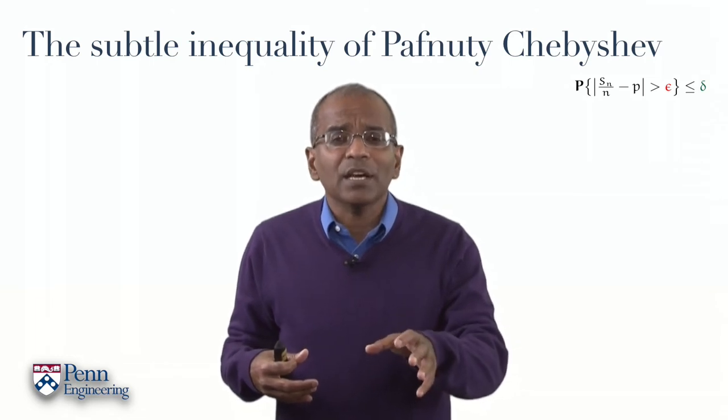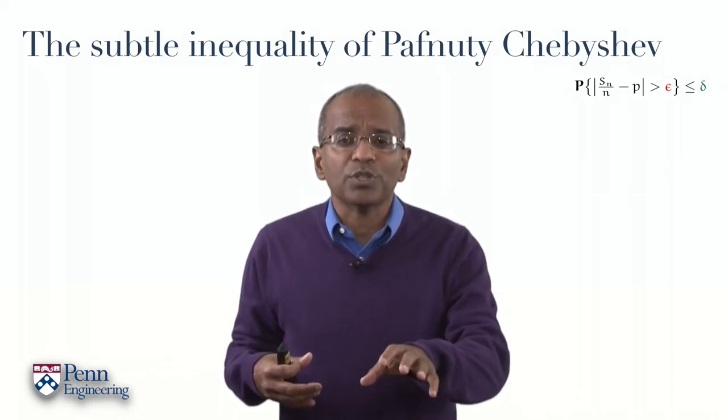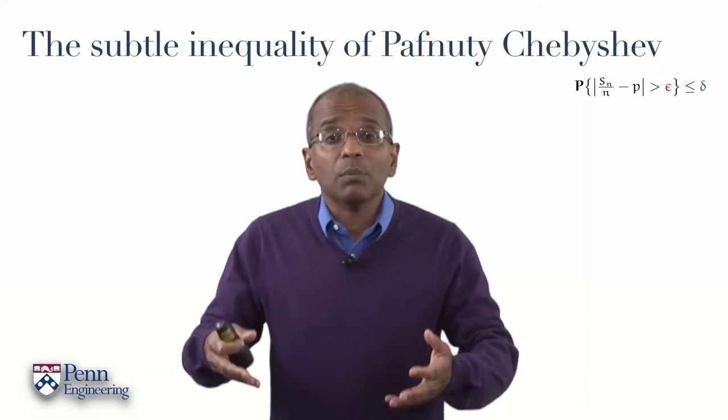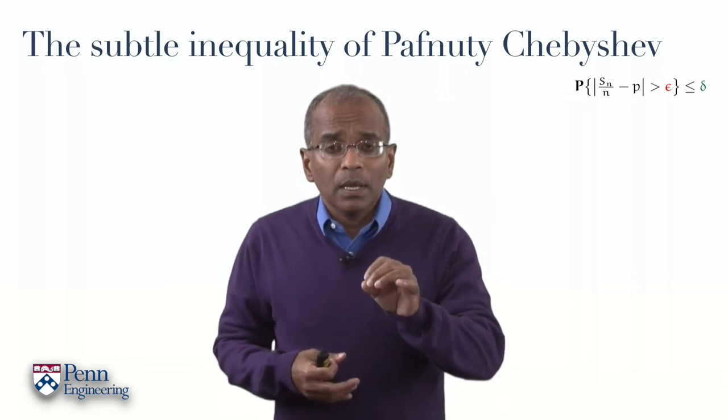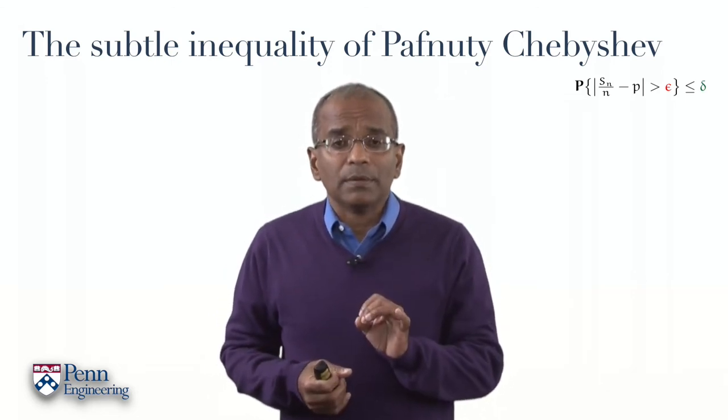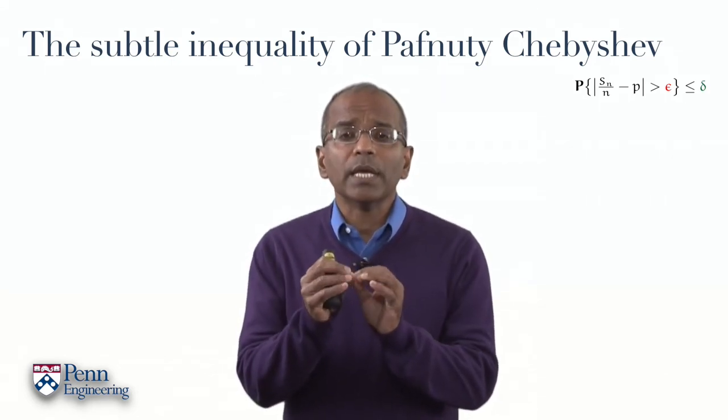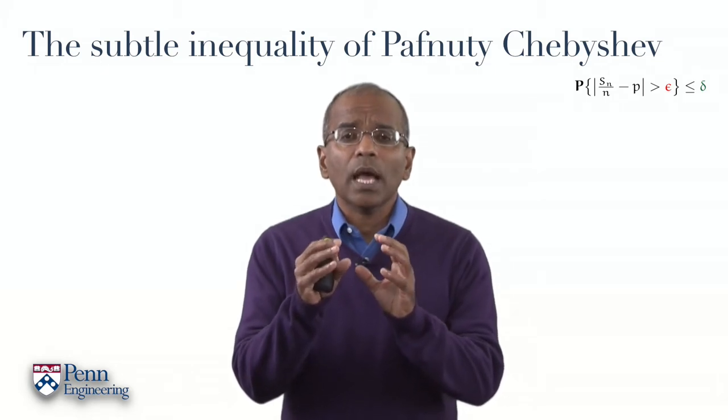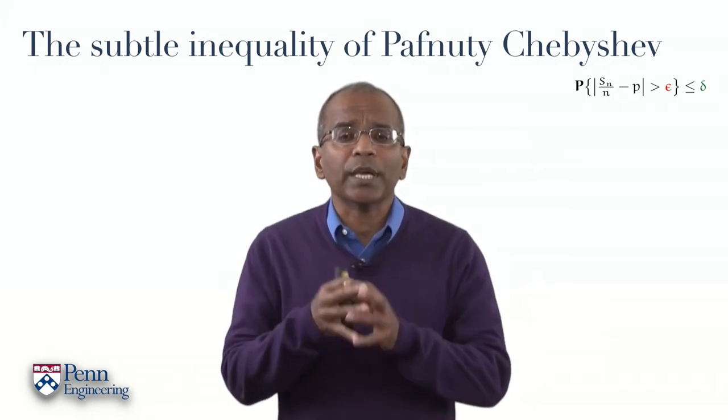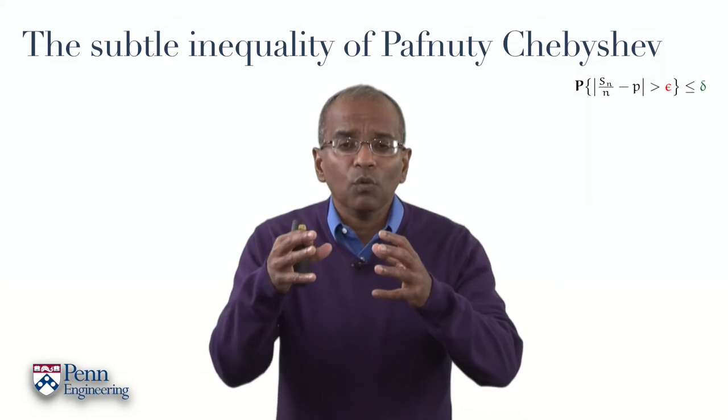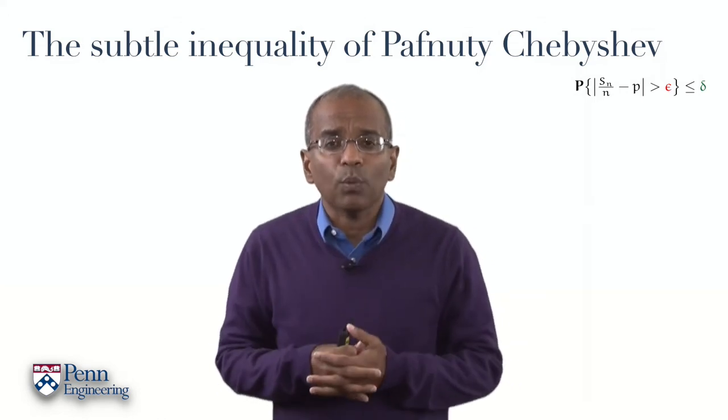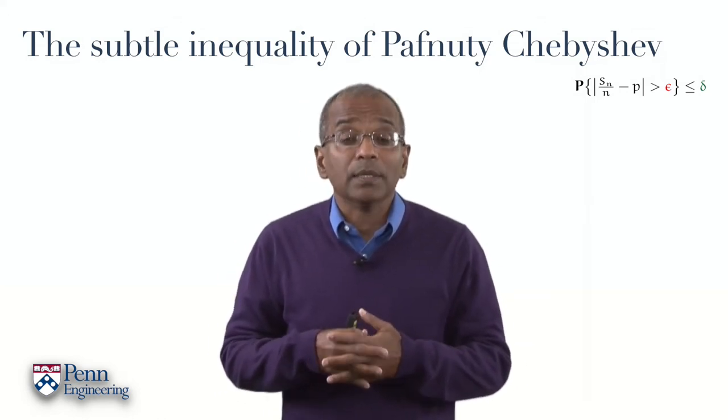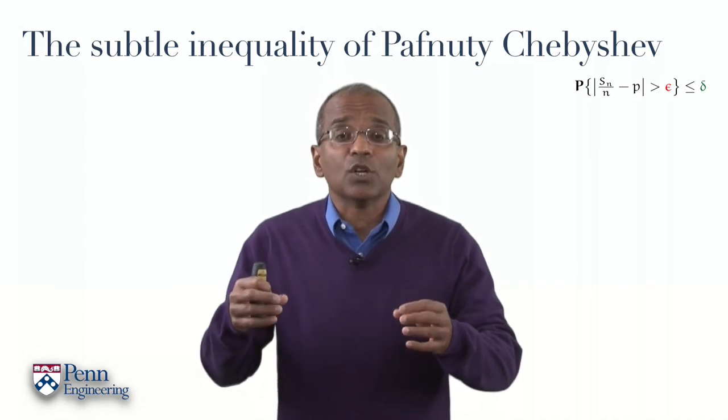And Chebyshev made deep and fundamental contributions to the theory of chance. His students are among the most noted probabilists of the 20th century. In 1867, he proposed a subtle and seemingly trite-looking inequality for the kind of probability we are concerned with. And this inequality turns out to be the key.